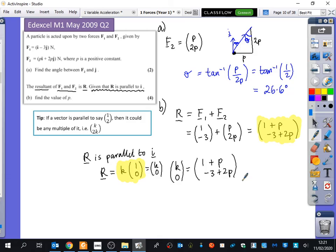Which is the best bit to look at, the I component or the J component? The J component. Good. The J component is better because it's equal to 0. So you get 0 equals minus 3 plus 2P. So you get that P is equal to 3 over 2.